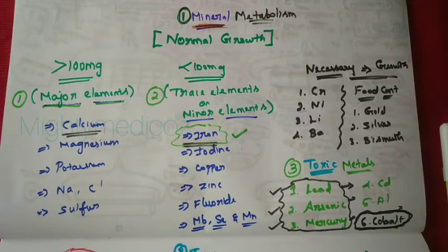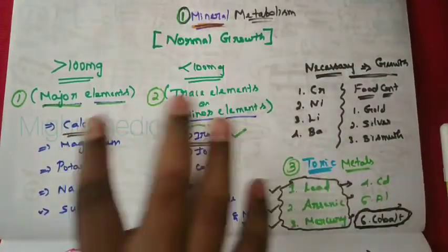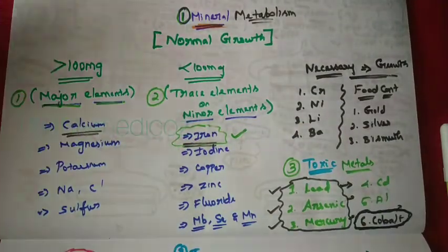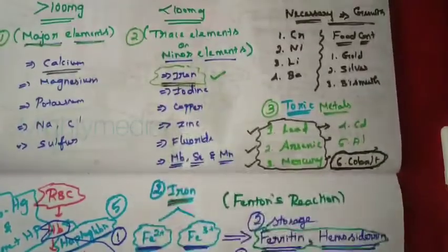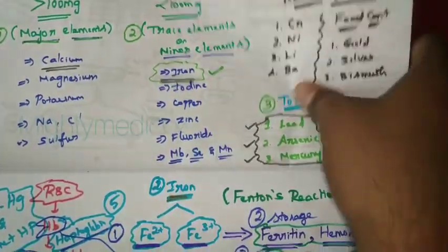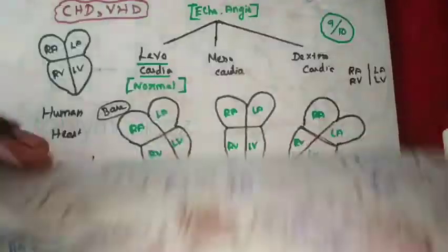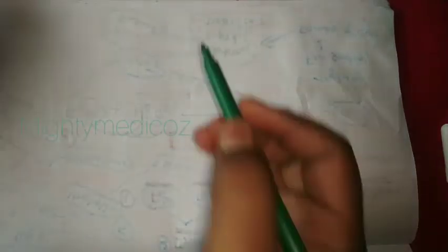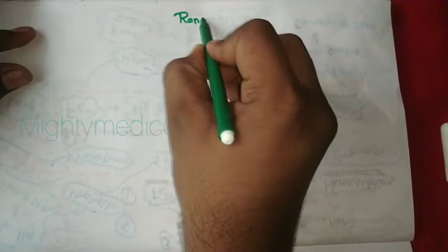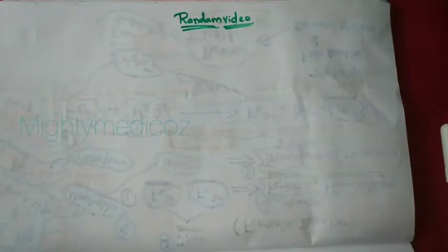Welcome to Mighty Medicals. We are in the middle of Mineral Metabolism. The first video was about major elements, minor elements, and toxic metals. The second video was about the Mineral Metabolism series, covering the trace element iron and Heme Metabolism. Today we are not continuing the Mineral Metabolism series — today's video is a random video covering CBC.